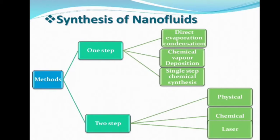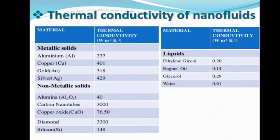Now, let us discuss about thermal conductivity of nanofluid. As you can see right on the board, there are materials and then there is thermal conductivity. When it comes to metallic, we have values given for aluminum which is 237, copper is 401, gold is 318, and silver is 429.